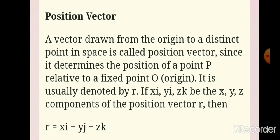Now let us define position vector. A vector drawn from the origin of the coordinates to a distinct point in space is called position vector. It determines the position of a point relative to a fixed point O called the origin. It is usually represented by the letter R.